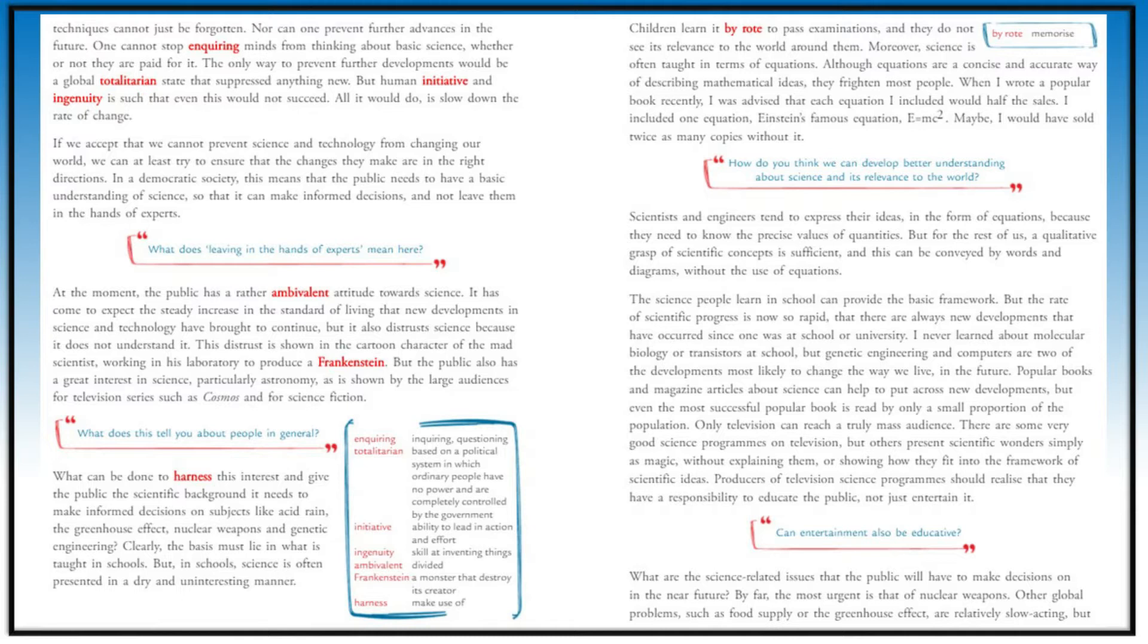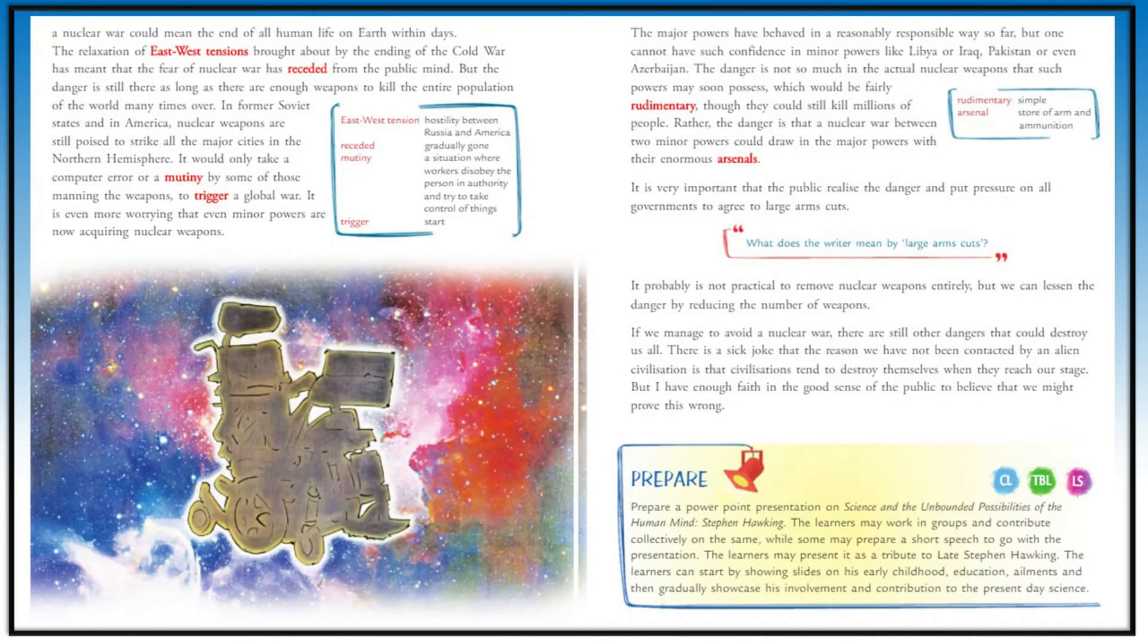The science you learn in school only provides basic ideas, but the speed of scientific development is very fast, so you have to keep learning the concepts. He says that he never learned molecular biology or transistors at school, but genetic engineering and computers are two of the developments that will change the way we live in the future.